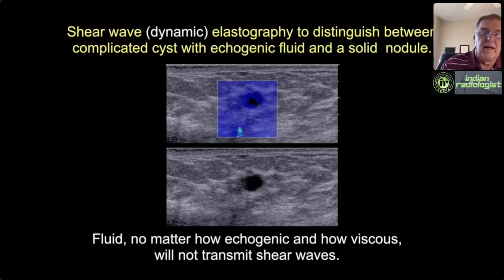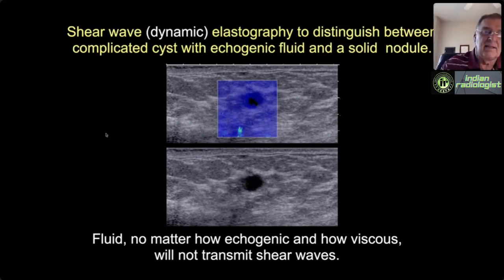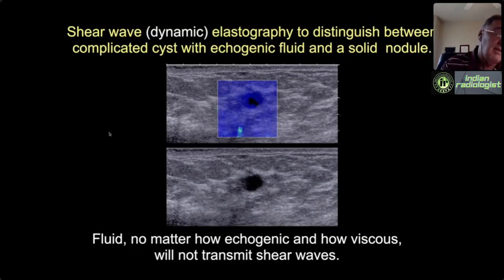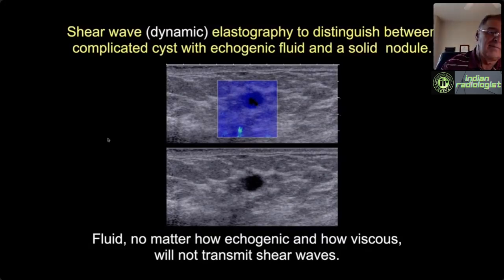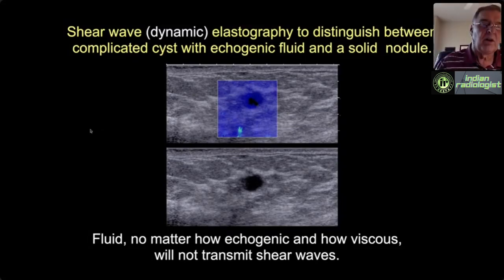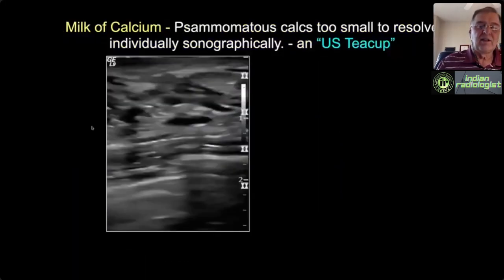Shear wave elastography also helps: shear waves won't transmit through fluid no matter how viscous, so black in the center indicates a complicated cyst not a solid mass. A caveat: liquefactive or hemorrhagic necrosis in a grade 3 triple-negative cancer can also give black in the center. Another caveat: shear wave and strain elastography don't work well with cysts smaller than one centimeter, which is often precisely where our dilemma lies.